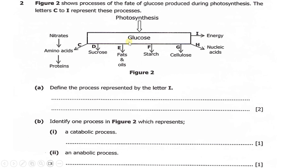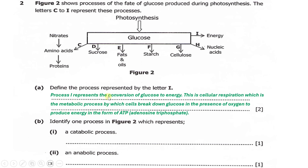Process I represents the conversion of glucose to energy, which is cellular respiration. Cellular respiration is the metabolic process by which cells break down glucose in the presence of oxygen to produce energy in the form of ATP, which stands for adenosine triphosphate.